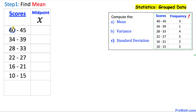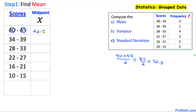Between 40 and 45, let me show you how to find the midpoint. Just write them down: 40 plus 45, always divided by 2. That gives us 85 divided by 2, which equals 42.5.